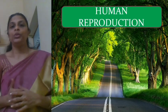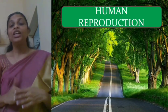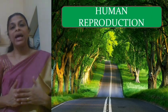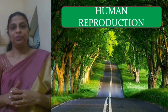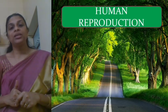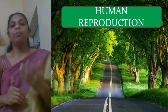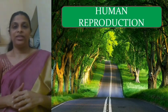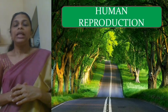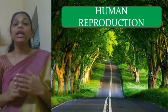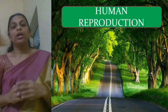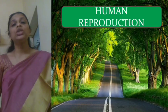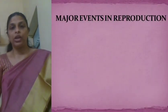As you all know, human beings are unisexual, meaning human males and females are separate. Human beings are also viviparous — viviparous means they give birth to young ones. Now let us discuss about the major events which take place during human reproduction.